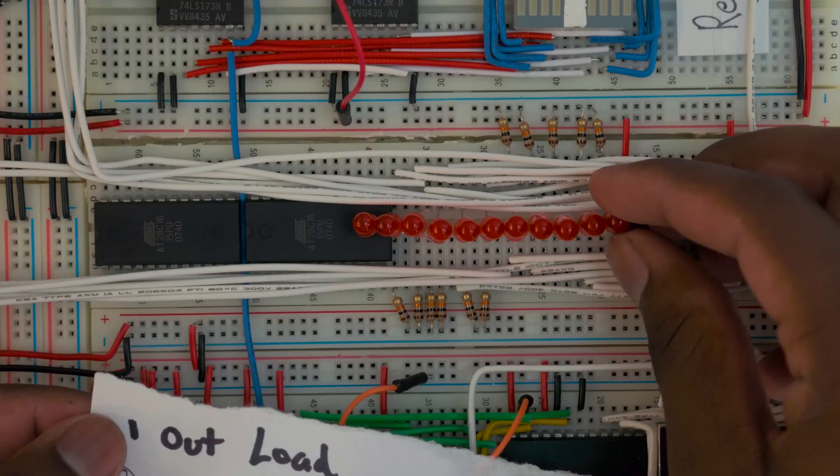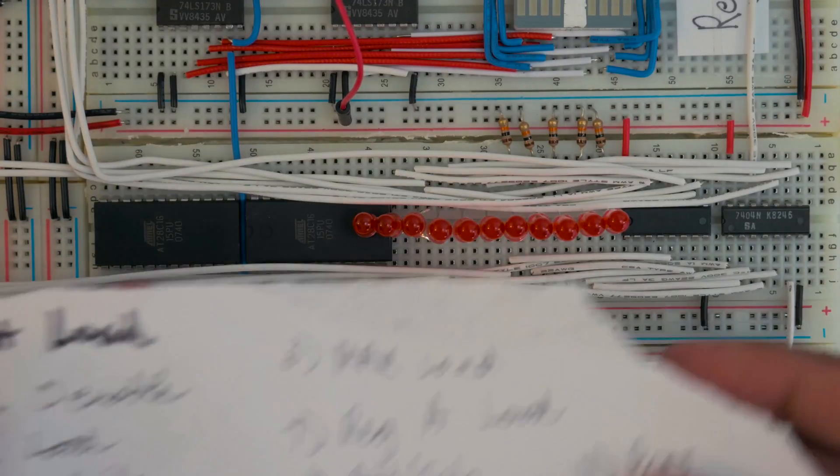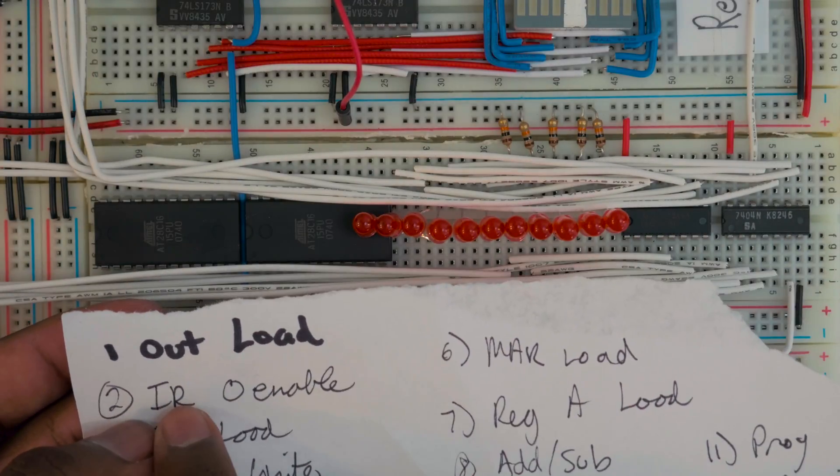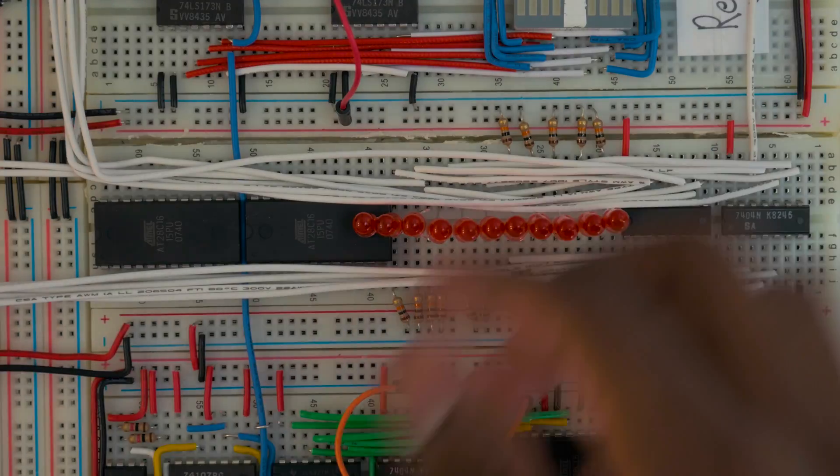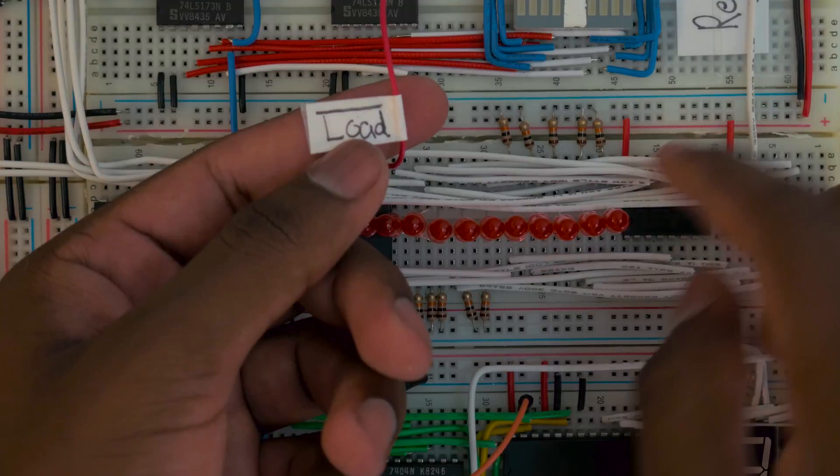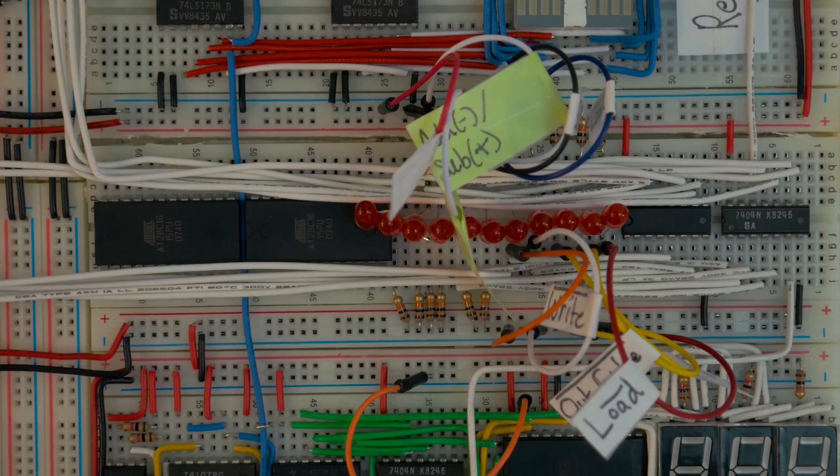The first LED here controls the output load. So this means the output register's load signal. And this second one, the second LED controls the input, the instruction register, sorry, output enable. So we can just go ahead and take the wires then that were previously there and just move them up into these locations. Then after register B load, we have the program counter. So the program counter, let me move over this so we can see.